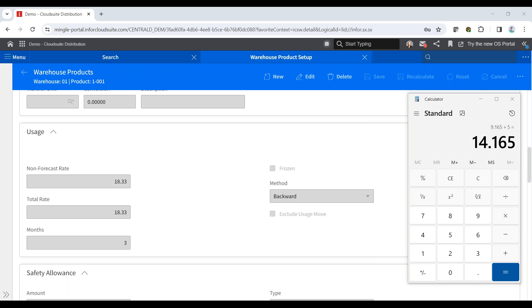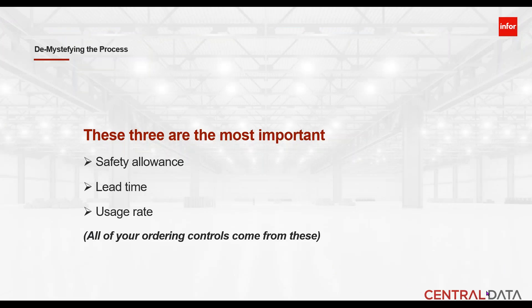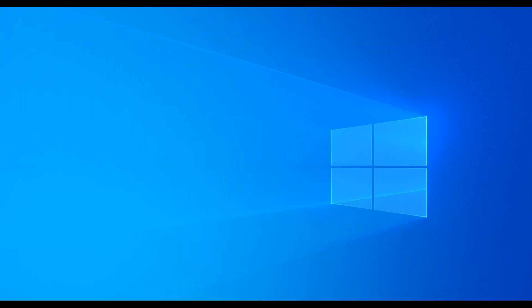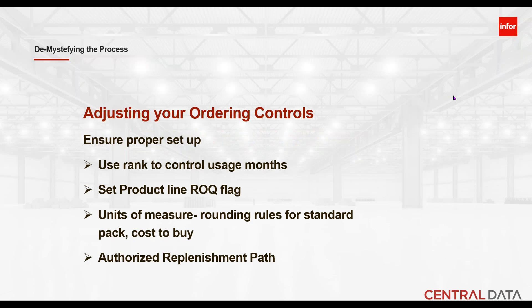So those are the important things: safety allowance, lead time, and usage need to be right. If you take care of those big three, the system does all the math for you. Now let's look at adjusting your ordering controls. One key setting is how many months you use for usage looking backwards. There's a setting called replenishment parameters where you can set usage months based on the rank of your item.